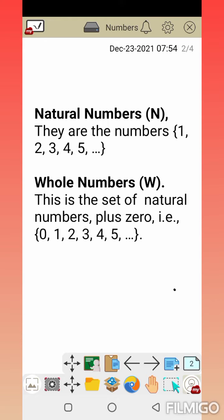Natural numbers do not have 0 or negative numbers added. Whole numbers include natural numbers plus 0, so we have 0, 1, 2, 3, 4, 5. Negative numbers are not included.